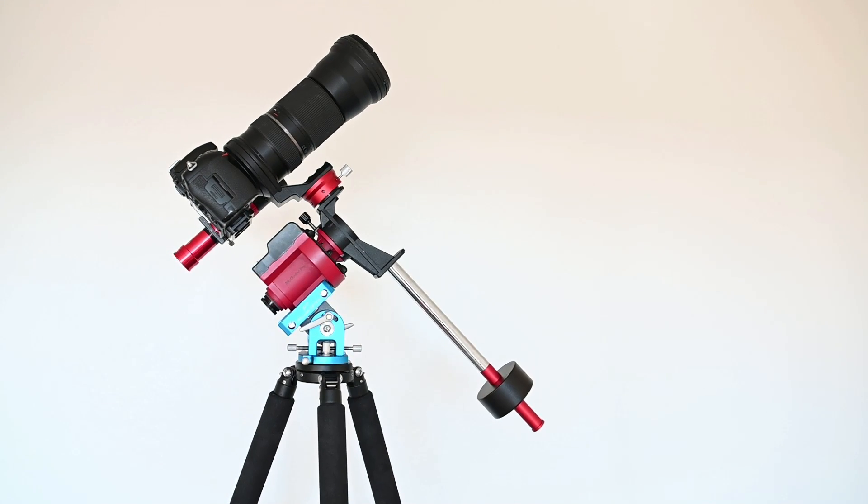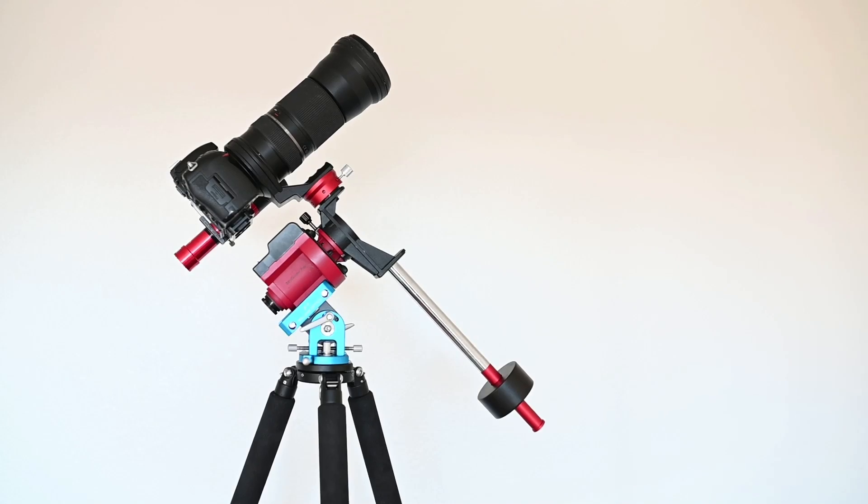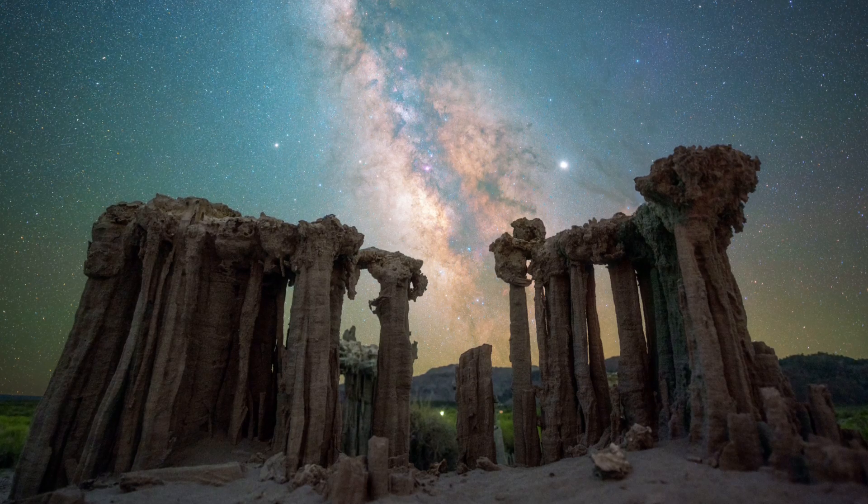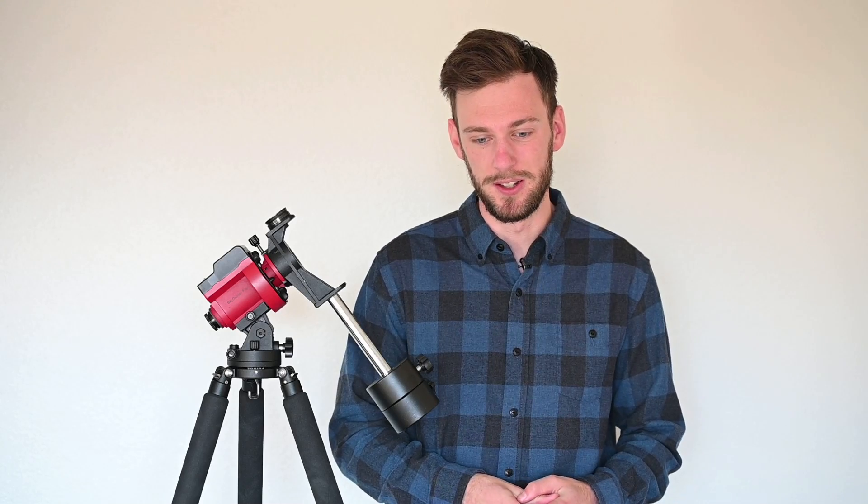The iOptron SkyGuider Pro is one of the most popular star trackers on the market along with the Star Adventure. One reason so many people use it is because you can do not only Milky Way photography with a wide angle lens, but deep space astrophotography with a telephoto lens or a small telescope.